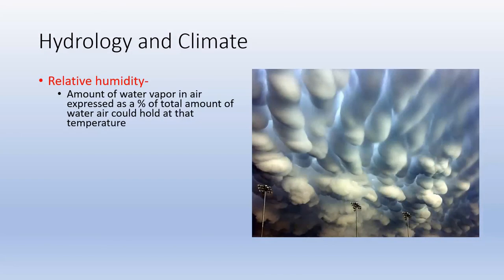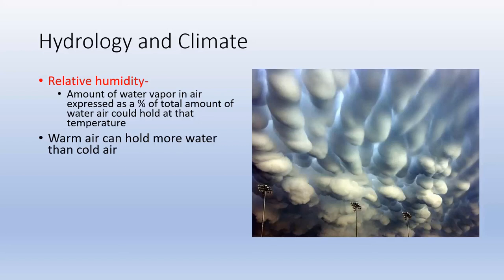Relative humidity is a measure of the amount of water vapor in the air as a percentage of the total amount that air mass can hold. How much it can hold is strictly a function of temperature — the warmer the temperature, the more water vapor the air can hold. So a cold air mass with a given amount of water vapor will have a much higher relative humidity than a warm air mass with the same amount of water vapor.